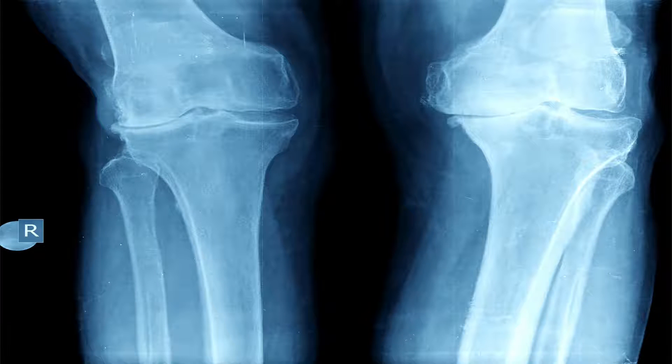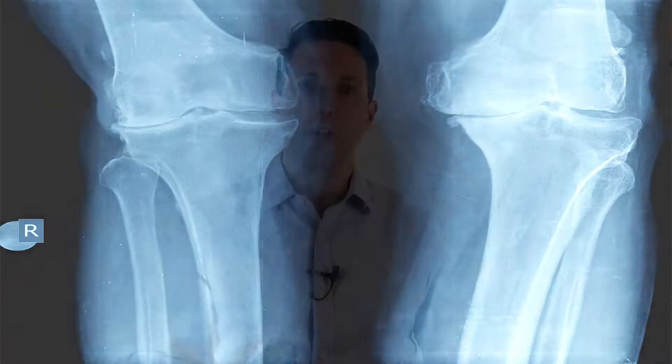In our office, we do weight-bearing exercises where you're standing up, sometimes with your knees bent and in different views because we want the gravity and we want your body weight to show us what your knee really does in real life. And if your body weight and gravity compress the joint and you get narrower joint space, that potentially signifies arthritis changes.